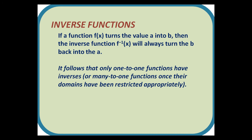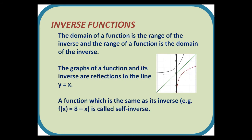If a function f(x) turns the value a into b, then the inverse function f⁻¹(x) will always turn b back into a. It follows that only one-to-one functions have inverses, or many-to-one functions once their domains have been restricted appropriately. The domain of a function is the range of the inverse, and the range of a function is the domain of the inverse. The graphs of a function and its inverse are reflections in the line y = x. A function which is the same as its inverse, for example f(x) = 8 − x, is called self-inverse.